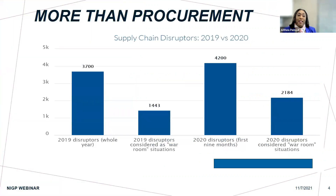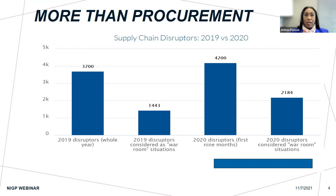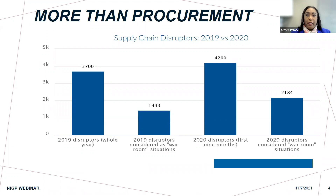More than procurement — if anything that we've learned over the last couple of years as a result of COVID is that we are not just in procurement. We are part of a global supply chain. Now that we see what happens in China, Europe, and all over the world impacts what we receive, we've also learned how many American firms are dependent for their materials to manufacture their products and goods and services from places we have never even heard of before.